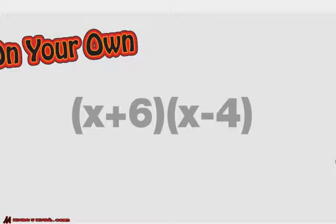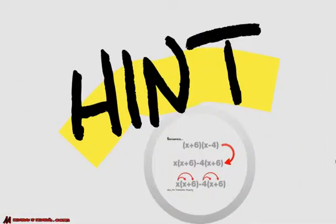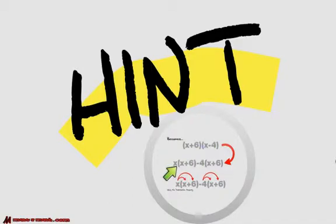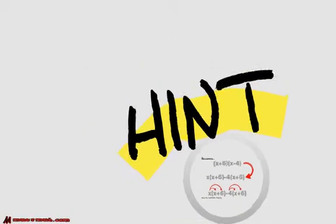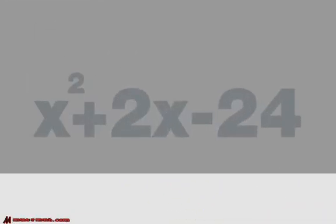Try doing this one on your own: x plus 4 times the quantity of x minus 4. Remember, use the distributive property and then the distributive property again. Here's a hint: take x plus 6 and multiply it by x, then take x plus 6 and multiply it by 4. Then x times x, x times 6, 4 times x, 4 times 6. Combine them all together once you simplify, and you should get x squared plus 2x minus 24.